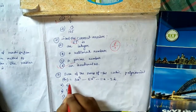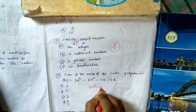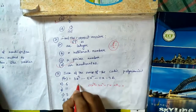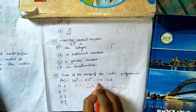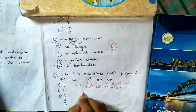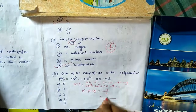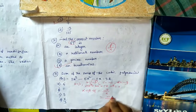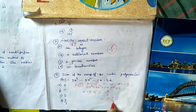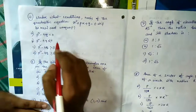Question number three: find the sum of the zeros of the cubic polynomial. The standard form is ax³ + bx² + cx + d. Here a = 3, b = -5, c = -11, and d = -3. The sum of zeros (alpha + beta + gamma) equals -b/a. So minus(-5) divided by 3 gives us 5 by 3. Option D is the answer.